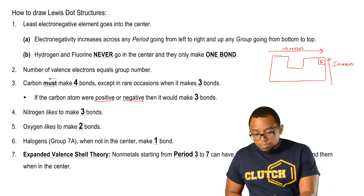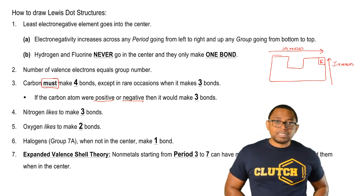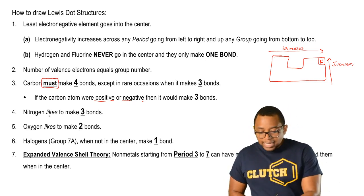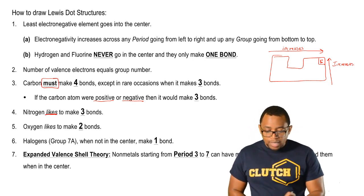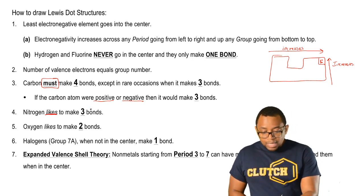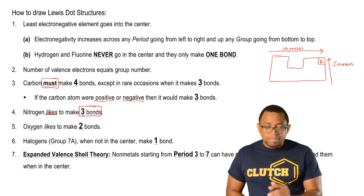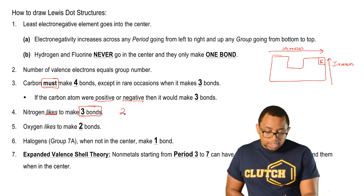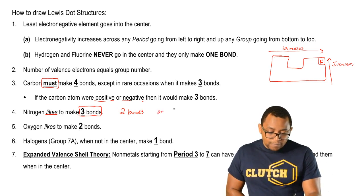Whereas carbon, for the most part, in many of the examples you're going to see is making four bonds, 'likes' means that it could make three if that can happen, but it could also make different number of bonds. Here three is its sweet spot, its magic number, but it could also make just two bonds or it can make up to four bonds.